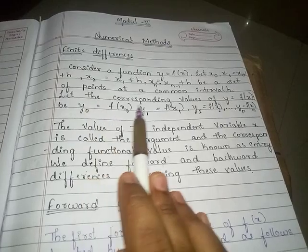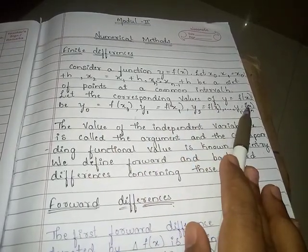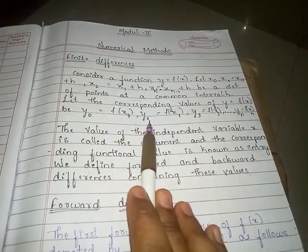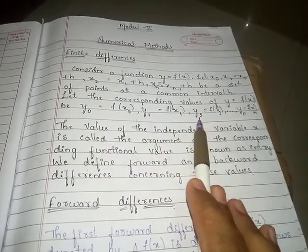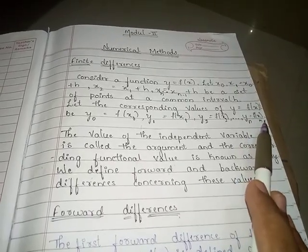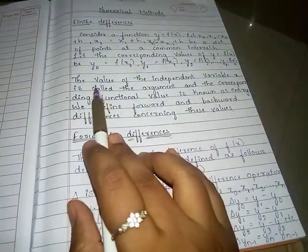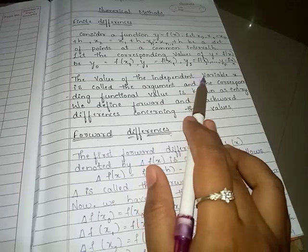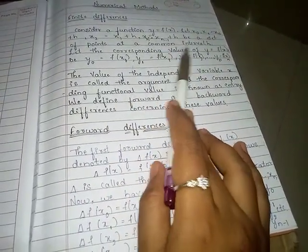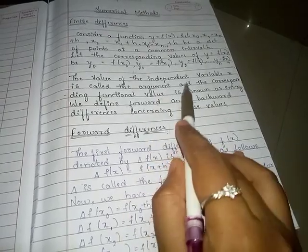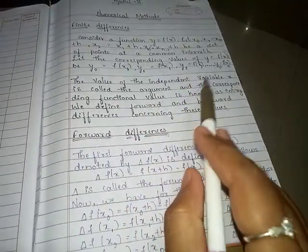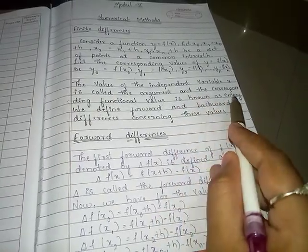Let the corresponding values of y = f(x) be y0 = f(x0), y1 = f(x1), y2 = f(x2), and so on to yn = f(xn). The values of the independent variable x are called arguments, and the corresponding functional values y = f(x) are known as entries.